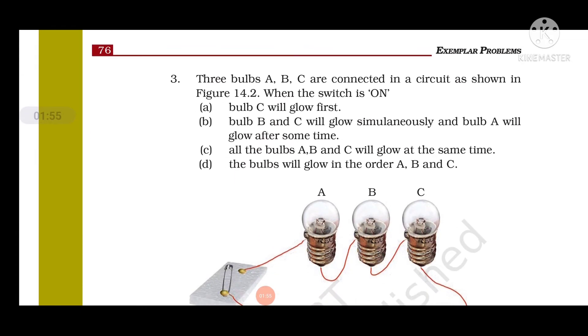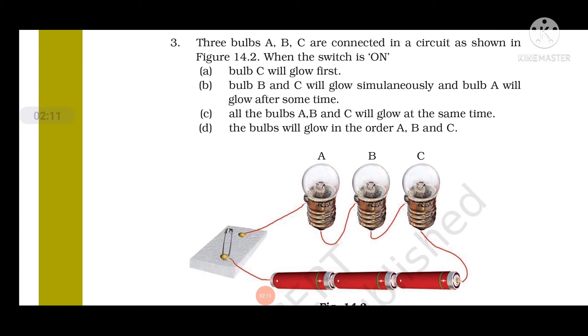Question number 3: Three bulbs A, B, C are connected in a circuit as shown in Figure 14.2. When the switch is on, then bulb C will glow first; bulb B and C will glow simultaneously and A will glow after some time; or all the bulbs A, B, and C will glow at the same time. Option C is correct because all the bulbs will glow simultaneously. There is no lag in the time in the flow of current through the circuit. As soon as you switch on the key and connect the circuit, all the bulbs glow together.